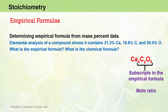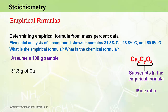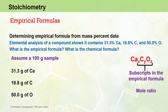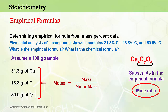When finding the empirical formula from mass percent data, a neat trick is to assume we start with 100g of the sample compound. With 100g, the 31.3% calcium means we have 31.3g of calcium, the 18.8% carbon means 18.8g of carbon, and the 50.0% oxygen means 50.0g of oxygen. With mass quantities of each element, we can work out the moles of each element using the molar mass equation, and the mole ratio gives us the empirical formula.